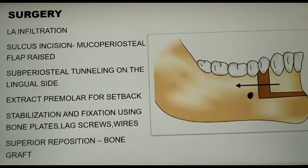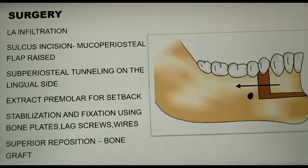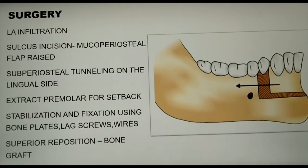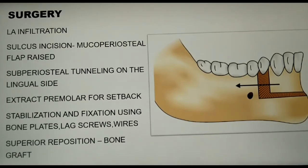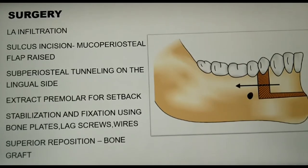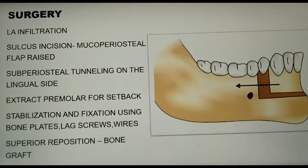Let's now see how the surgery is performed. Local anesthetic solution is infiltrated into the lower labial vestibule. A sulcus incision is placed and a full thickness mucoperiosteal flap is raised to expose the inferior border of the anterior mandible and the mental foramen on either side. It is important to preserve the muscle attachment at the inferior border of the anterior mandible.